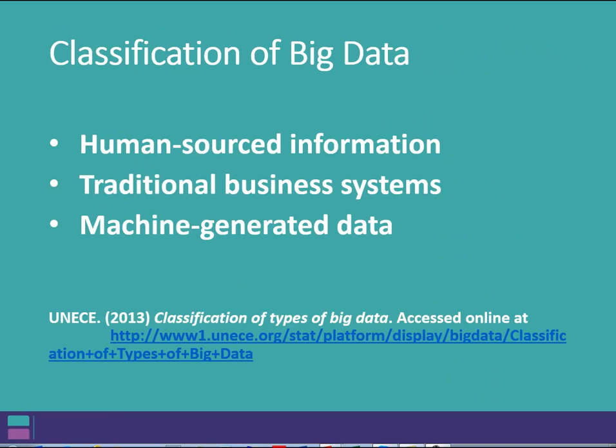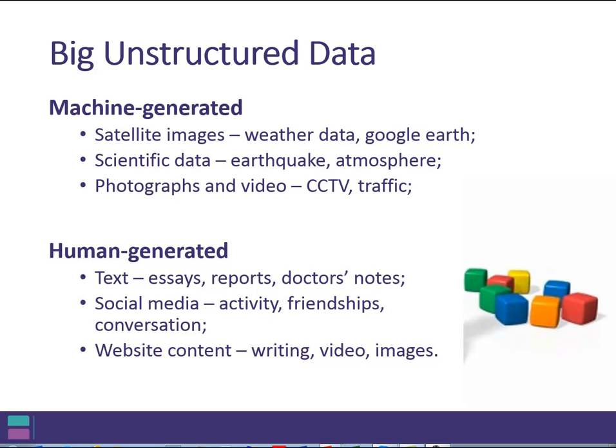The five Vs help us to think about the characteristics of big data, but it's also helpful to think about the types of data that we might include within that term. And we can think of broadly three types of data: human sourced information coming directly from individuals, traditional business systems, the sort of administrative records and databases held and maintained by organizations in the course of their work, and machine generated data like the positioning of mobile phones. And these are all examples of large unstructured data sets that are quite different from the conventional databases with records that we may be used to working with.